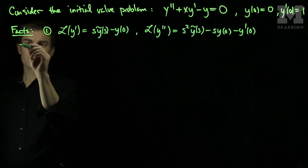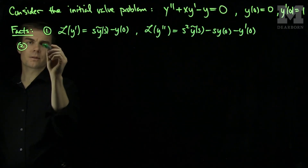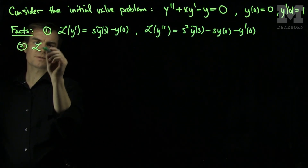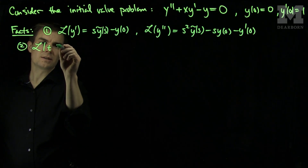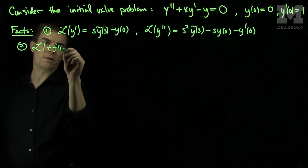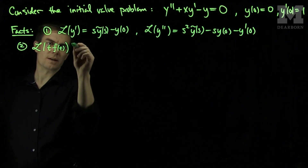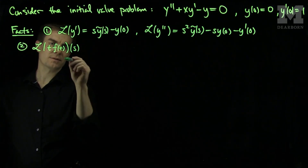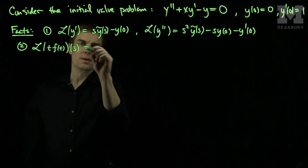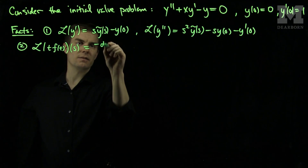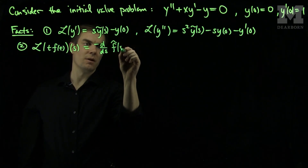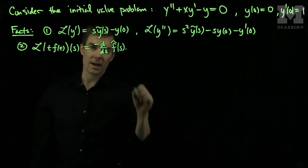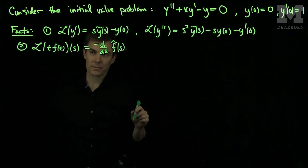Conversely, if I find the Laplace Transform of t times any function as a function of s, this will be the negative derivative with respect to s of the Laplace Transform of the function f.